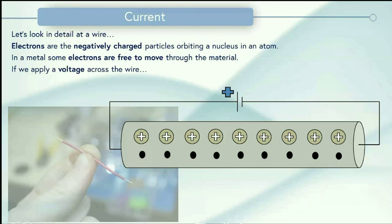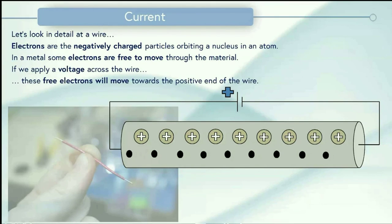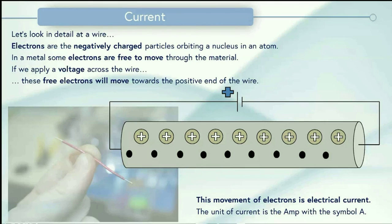In a metal, some electrons are free to move through the material and we can make use of this by applying a voltage across the wire. So here we've got a symbol for a battery with a positive end and a negative end. This means that one end of the wire is going to be positive and the other end is going to be negative. What happens is that these free electrons will move towards the positive end of the wire because they're negatively charged and they're attracted towards the positive.